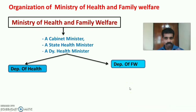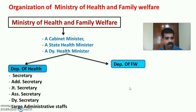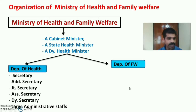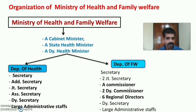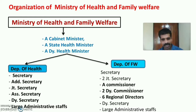The Ministry of Health and Family Welfare is headed by a Cabinet Minister, a State Health Minister, and a Deputy Health Minister. The Department of Health is headed by a Secretary, followed by Additional Secretary, Joint Secretary, Assistant Secretary, Deputy Secretary, and large administrative staff. The Department of Family Welfare is headed by a Secretary, two Joint Secretaries, a Commissioner, two Deputy Commissioners, six Regional Directors, Deputy Secretary, and large administrative staff.